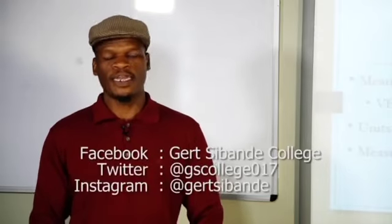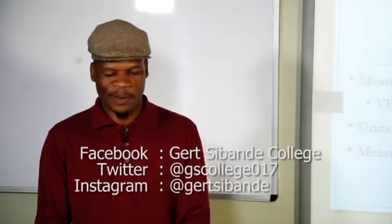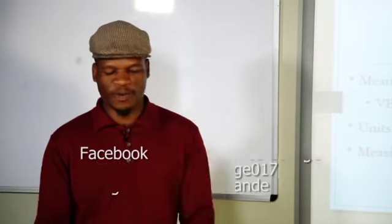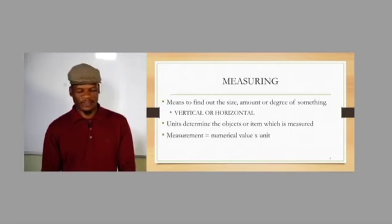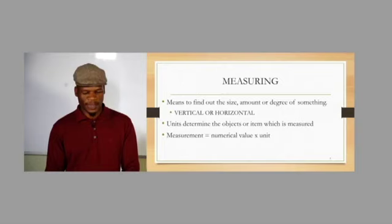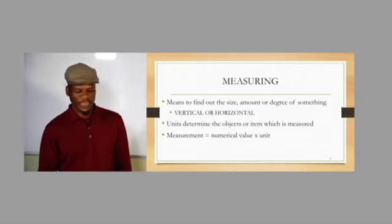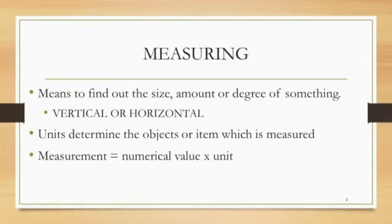When we are doing measuring in engineering, we have to identify or determine the size or the amount of a degree which needs to be measured on the structure. There are two possibilities: you can either measure the vertical component or the horizontal component. Each measurement must include two items — the numerical value and the unit. A measurement without a unit is not meaningful.